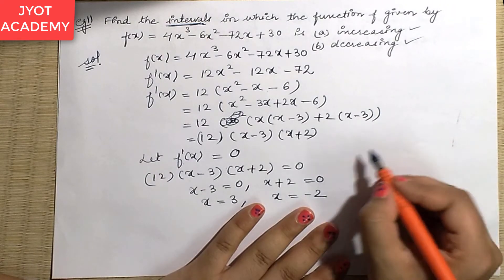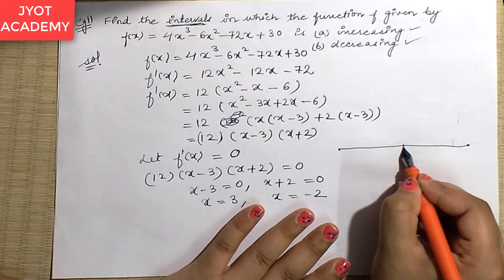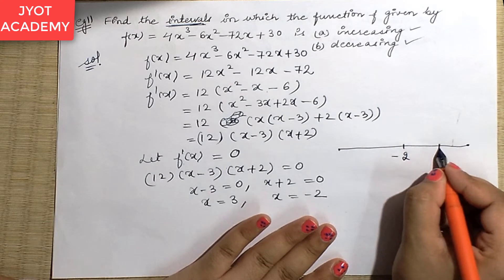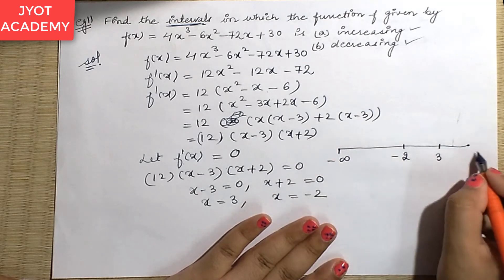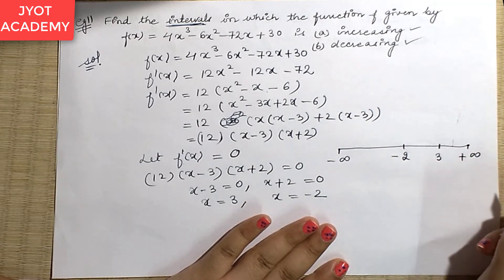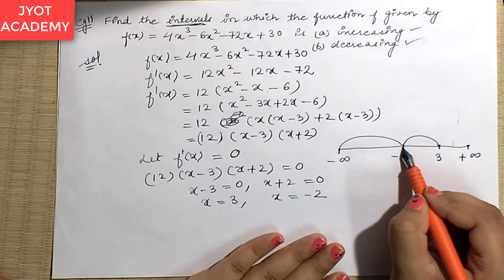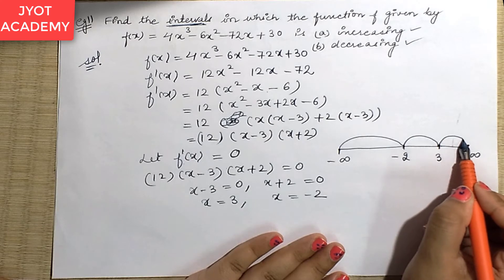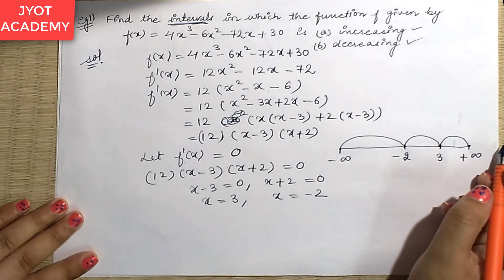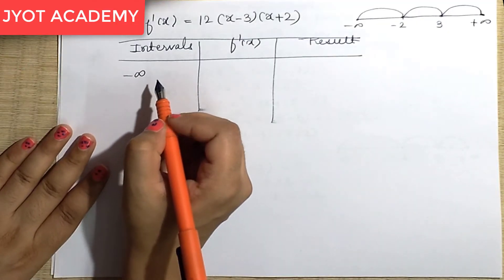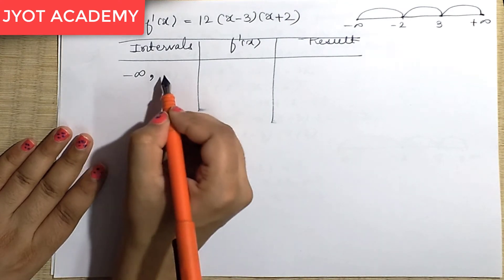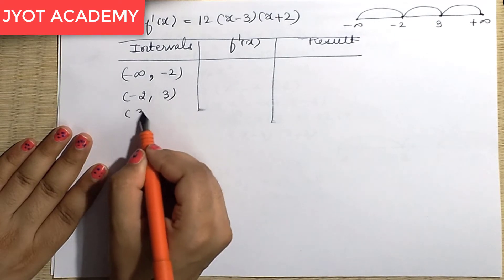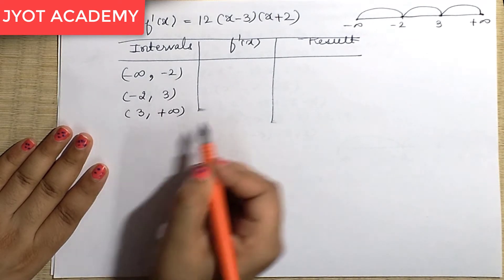Now we draw a number line. We have minus infinity on the left, then -2, then 3, then positive infinity on the right. This gives us three disjoint intervals: (-∞, -2), then (-2, 3), and then (3, +∞). We will test the sign of f'(x) in each of these intervals.